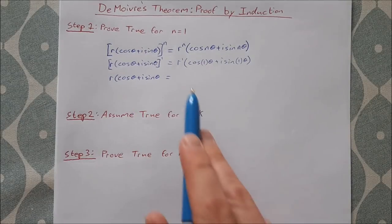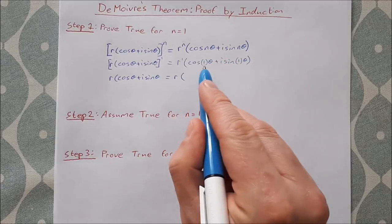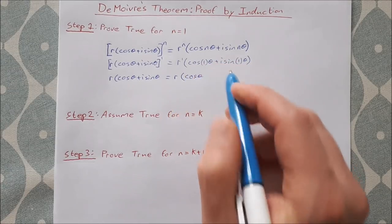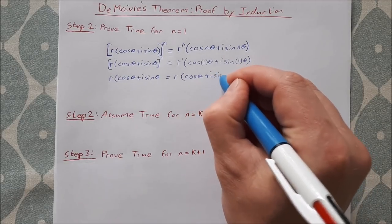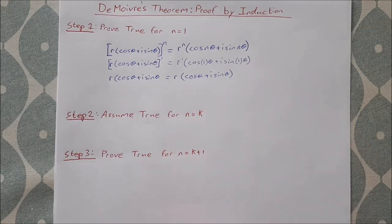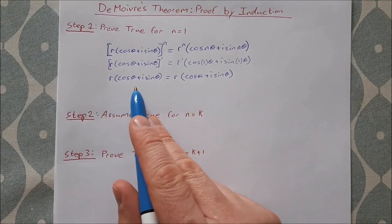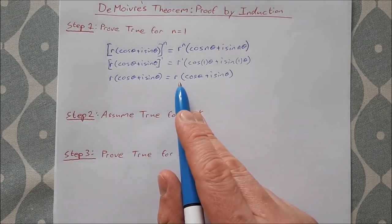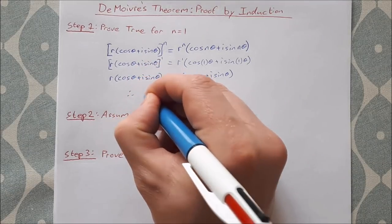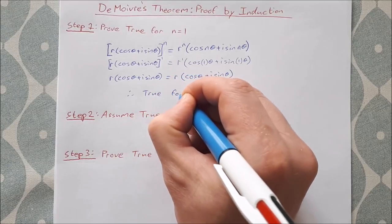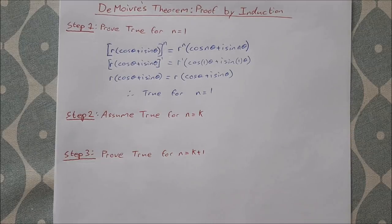On the right-hand side, r to the power of 1 is just r, and cos of 1 theta is cos theta, plus i sine of 1 theta is sine theta. So the left-hand side equals the right-hand side: r cos theta plus i sine theta equals r cos theta plus i sine theta. Therefore it's true for n equal to 1.